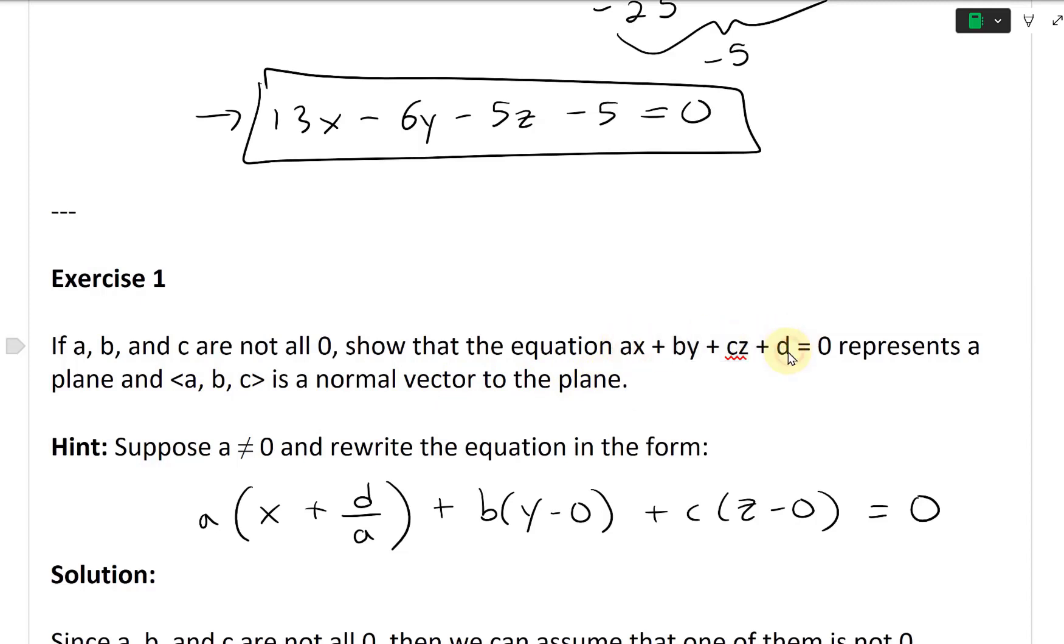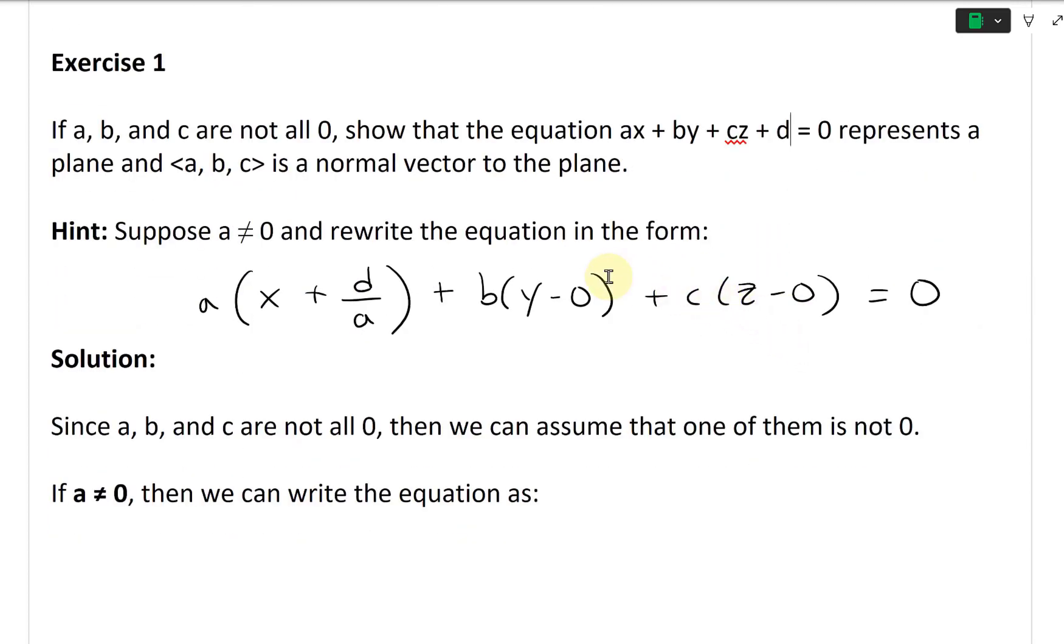We're given this equation with the d value so it's a plane. The hint says suppose a is not equal to zero and rewrite the equation in the form a times (x + d/a) plus b times (y - 0) plus c times (z - 0) equals zero.